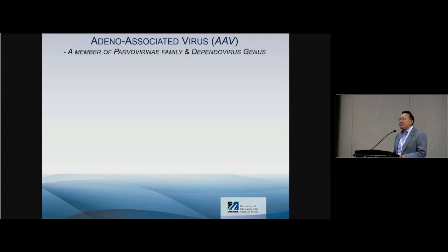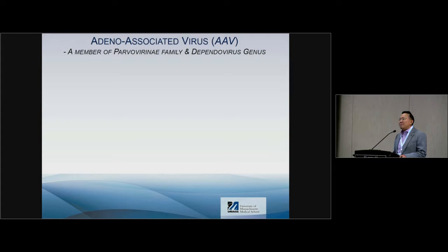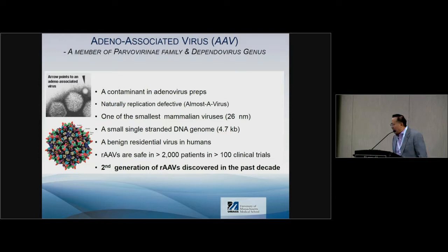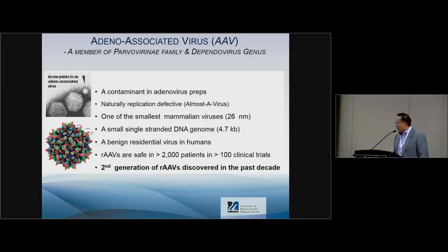AAV is a member of Parvoviridae and is a helper-dependent virus — it was initially discovered as a contaminant in adenovirus preps, hence 'adeno-associated virus.' This is a naturally defective virus, which is why some colleagues call it 'almost a virus.' It is one of the smallest mammalian viruses at only 26 nanometers. One of its major limitations is the small packaging capacity of only 4.7 kb.